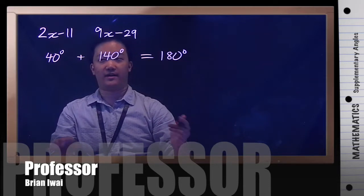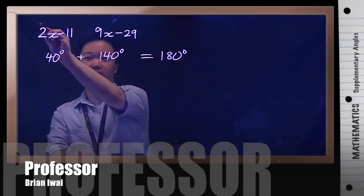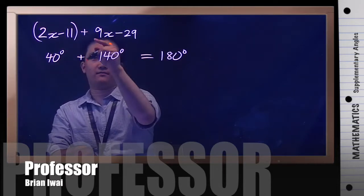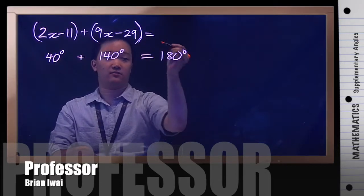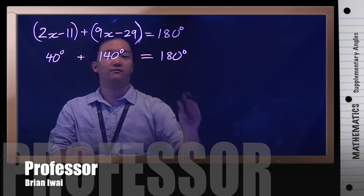So knowing that, what you want to do is you want to do 2x minus 11, which is your first degree, and you want to add that to 9x minus 29, and the sum of that should be 180 degrees.